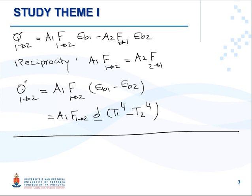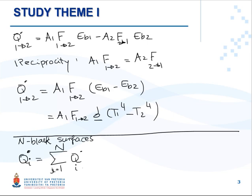Now assume that we have an enclosure consisting of N black surfaces. What we want to find here is Q-dot-i, the net radiation heat transfer from surface i of this enclosure. It is fair to say that it's the sum from J equals 1 to N of Q-dot i to J, because previously between two surfaces it was Q-dot 1 to 2.